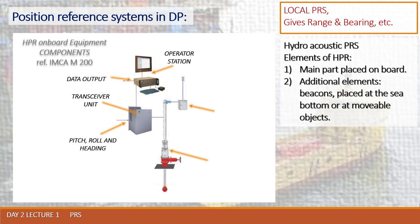We need to control the elevation level of the antenna, and for that a hoist control unit is responsible. The hull unit separates the vessel compartment from the outside water environment. This is a remotely controlled valve which may be activated manually or remotely.